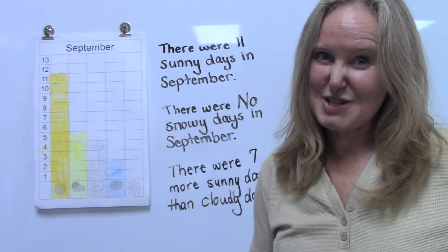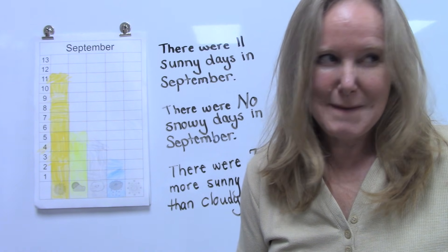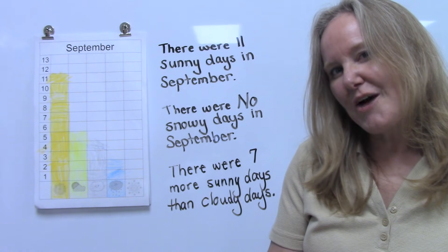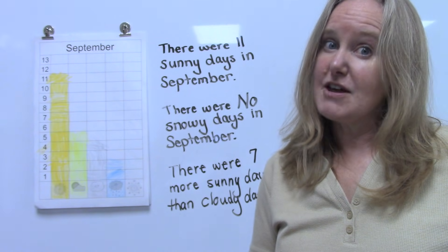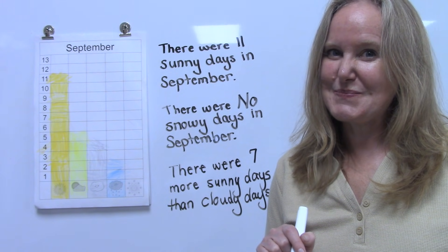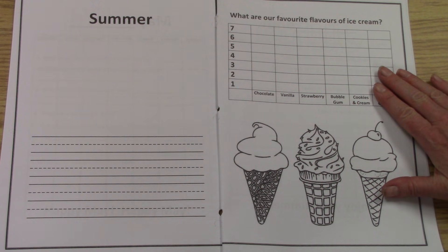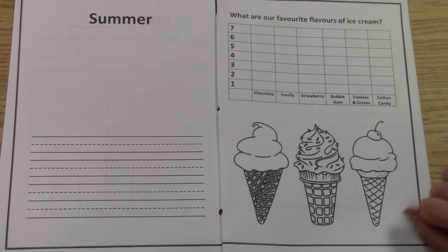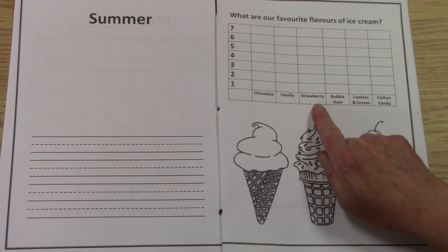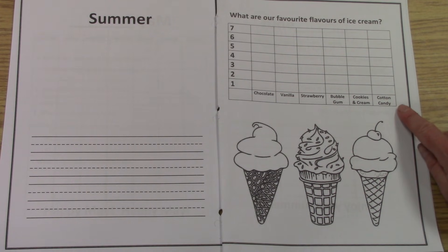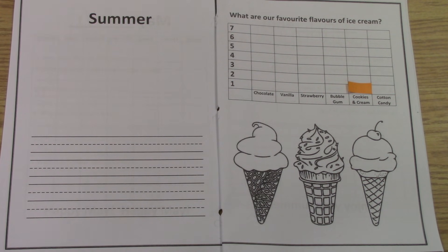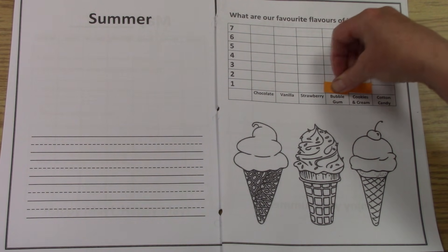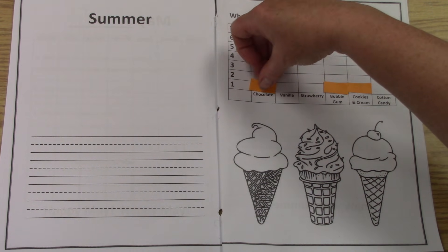We make a lot of graphs in my classroom, and our favorite one is about ice cream. In my class, we complete a graph about our favorite flavors: chocolate, vanilla, strawberry, bubblegum, cookies and cream, and cotton candy. Can you guess what my favorite flavor is? It's cookies and cream! My son's favorite is bubblegum, but my husband likes chocolate.